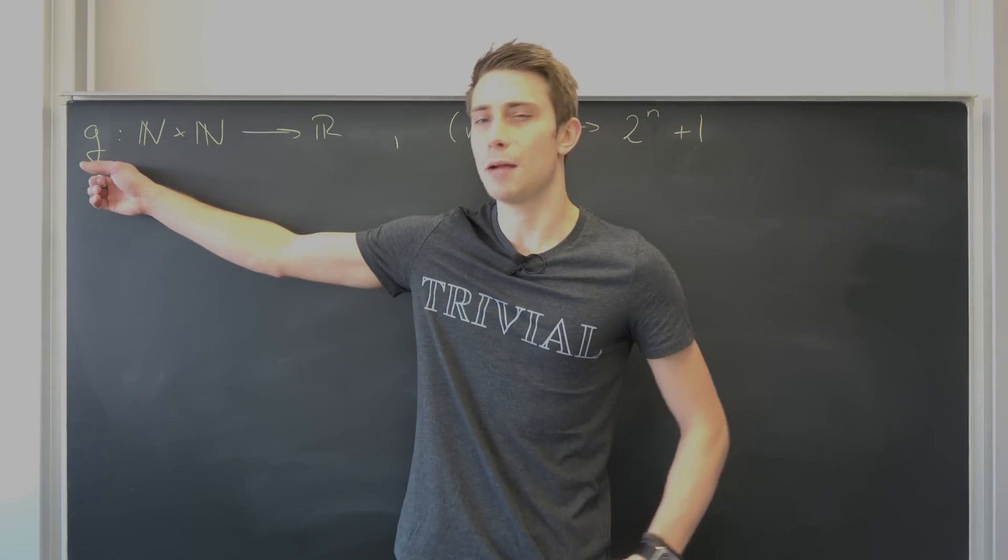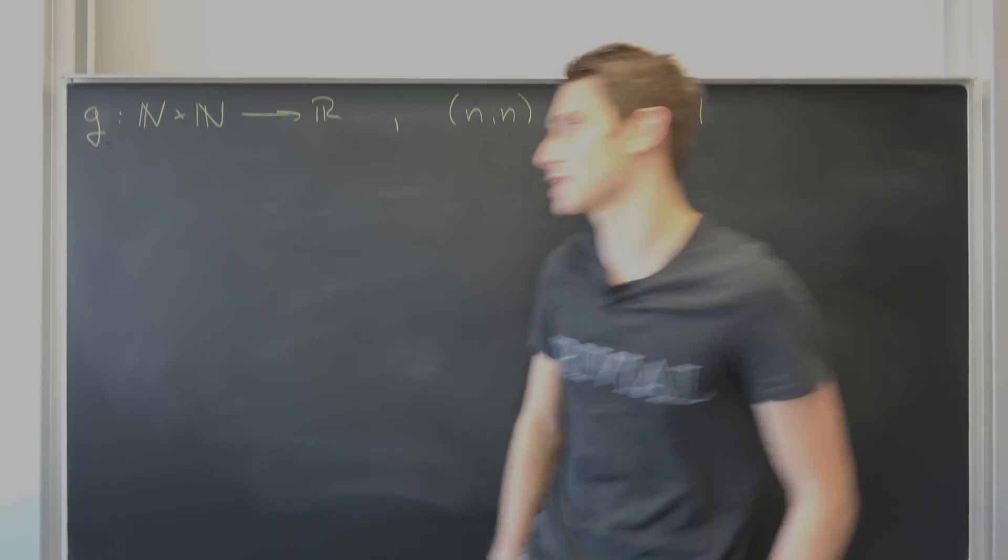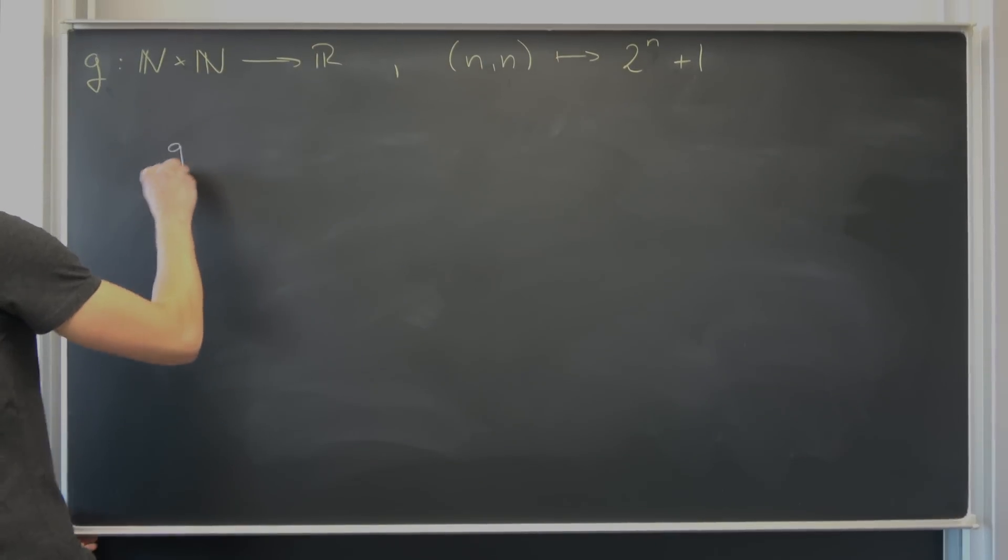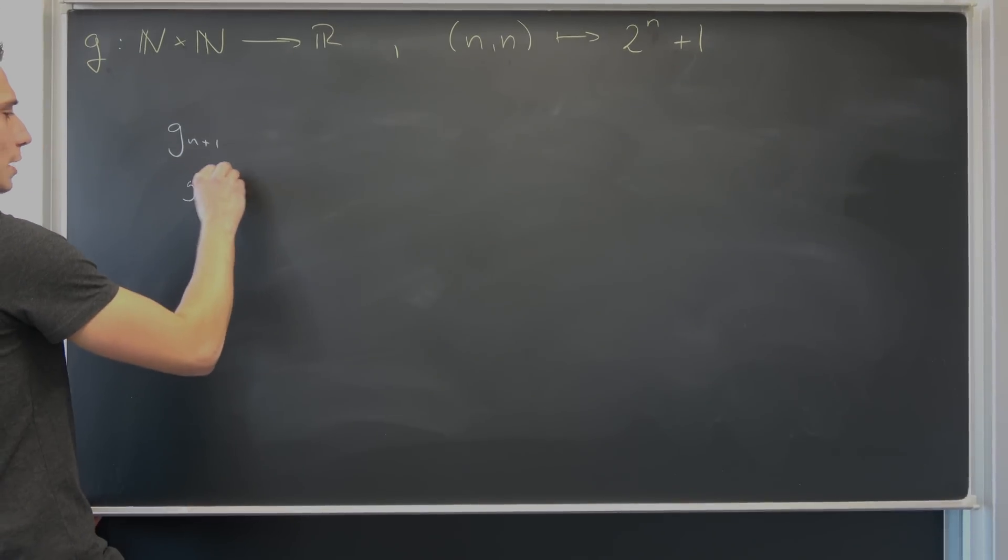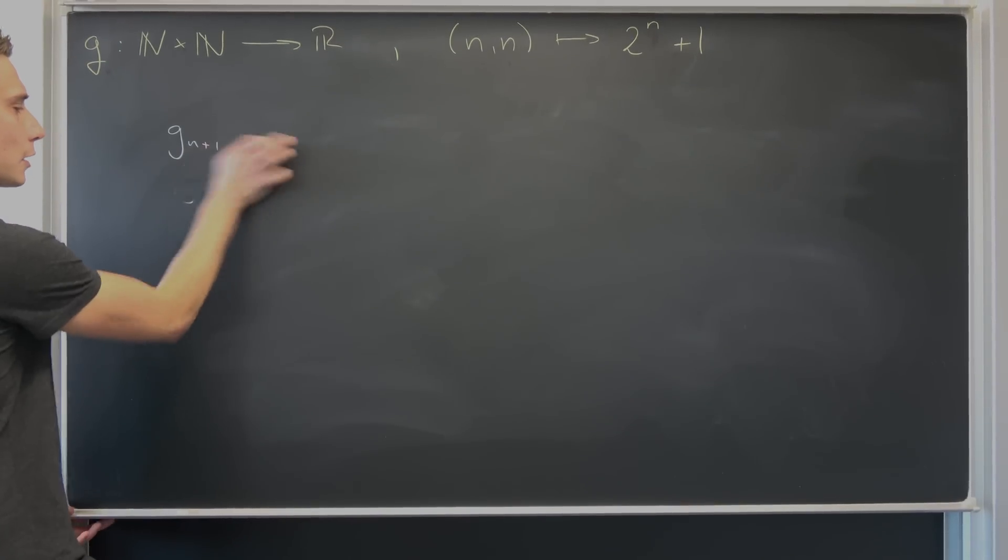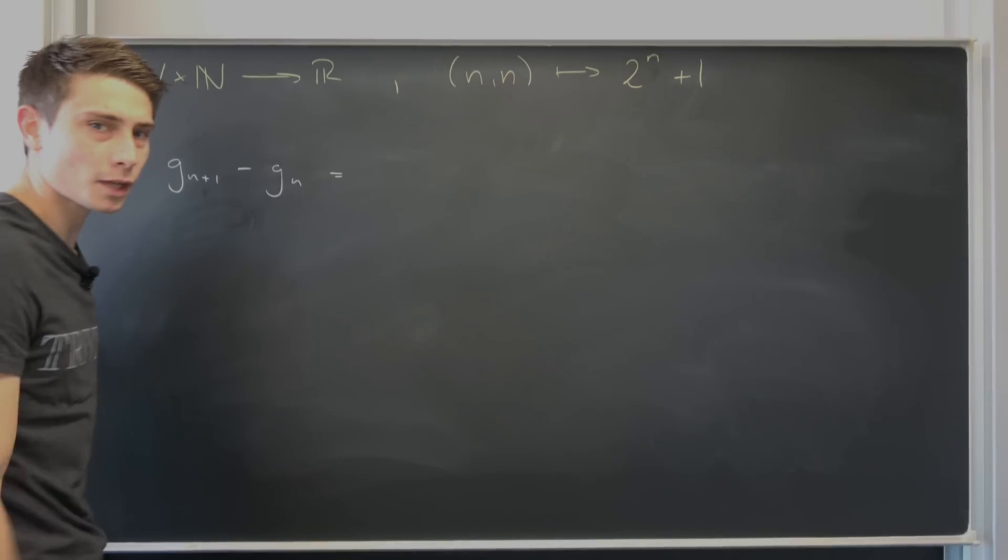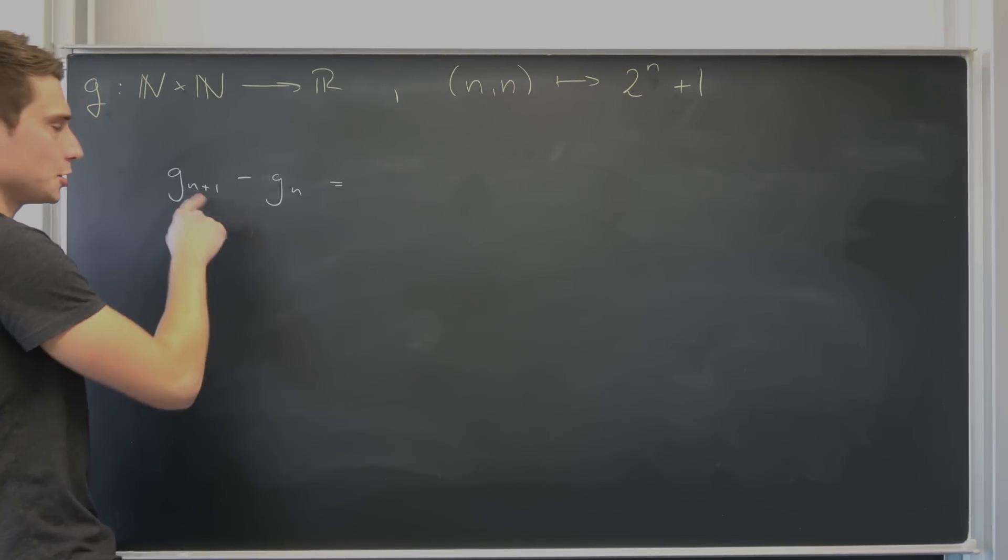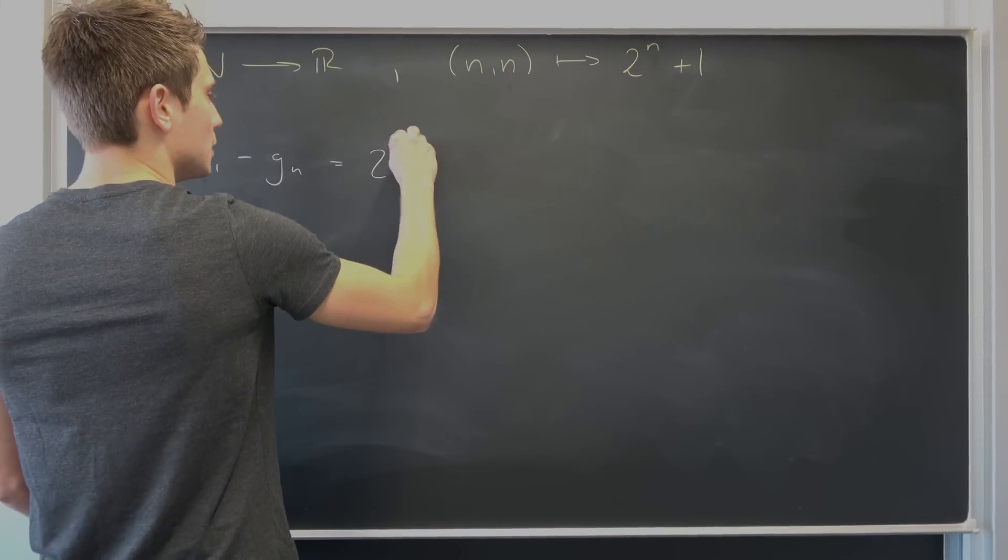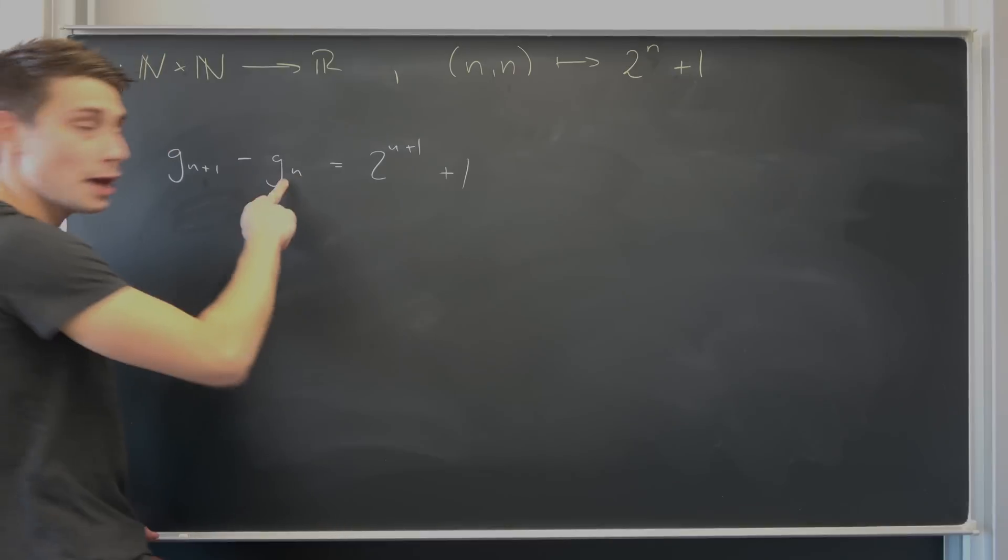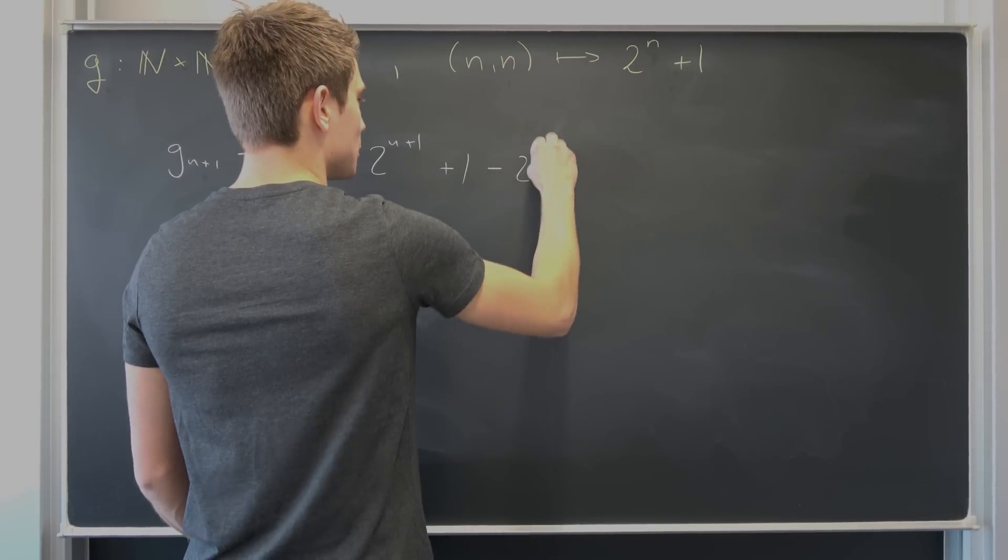So why not take an n plus 1 member and subtract an nth member? So we are going to take g of n plus 1, minus g_n. But how is our g defined? Well, g_{n+1} is just this right here with an n plus 1 plugged in. So this is 2^{n+1} + 1 minus g_n. This is basically just this, so minus 2^n minus 1.